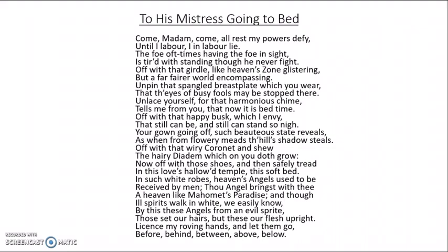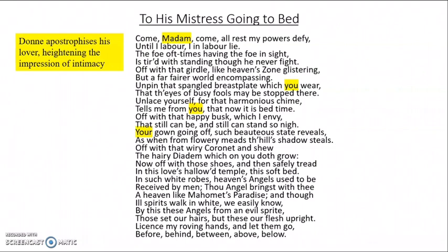One of the things you might notice about this poem is Donne's use of apostrophe. To apostrophise someone in a poem is to address them directly. We can see that Donne is doing this through his use of the pronouns 'you' and 'your.' The first line, 'Come madam come,' immediately tells us that the mistress of the title is being addressed in the second person directly. This technique, used by Donne in much of his love poetry, serves to heighten the sense of intimacy between the two lovers.